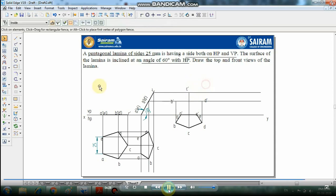Now with the help of line command, join all these points: A dash, B dash, C dash, D dash, E dash. Make it 0.5mm thickness. Select all the entities, group them and set 0.5mm thickness.